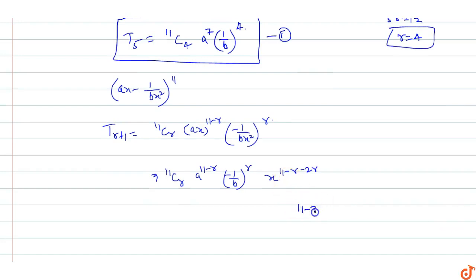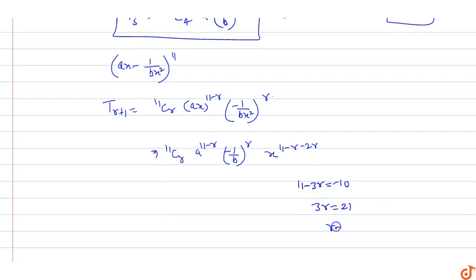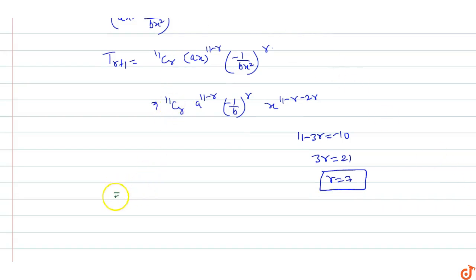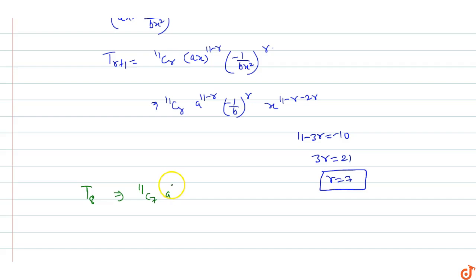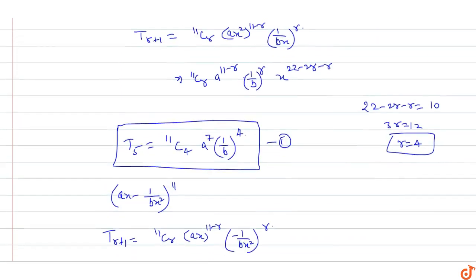x^(-10) के लिए 11 - 3r = -10, so 3r = 21, r = 7. Coefficient of x^(-10): r = 7 means T8 (8th term) of this expansion. So coefficient is 11C7 · a^(11-7) · (-1/b)^7 = 11C7 · a^4 · (-1/b^7). This is equation second.